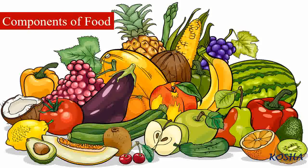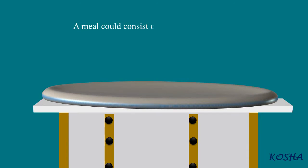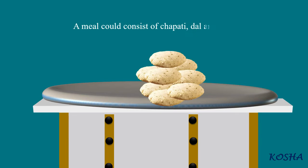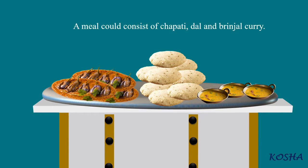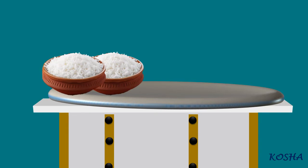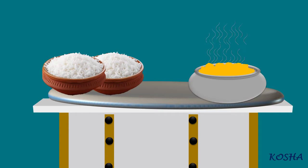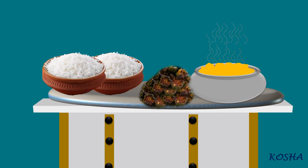Components of food. A meal could consist of chapati, dal and brinjal curry. Another may be rice, sambar and a vegetable preparation of lady's finger, i.e. bhindi.